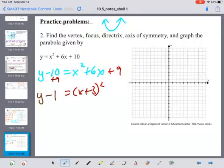So it's going to give me a vertex of negative 3, positive 1.